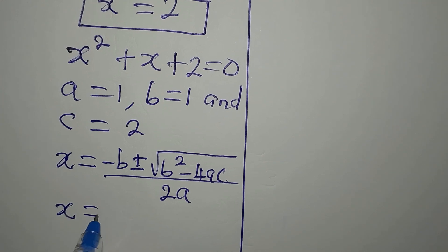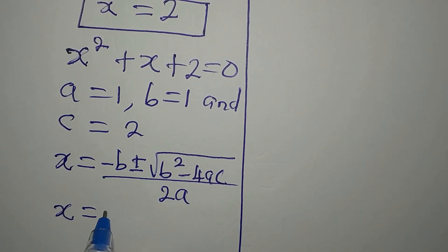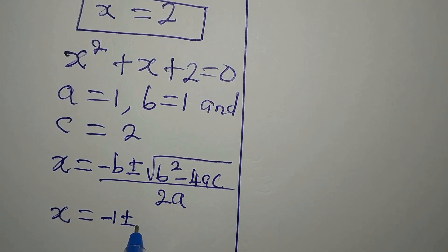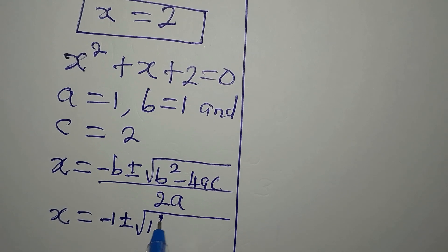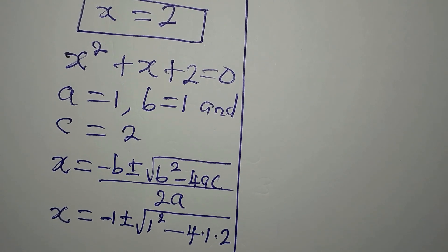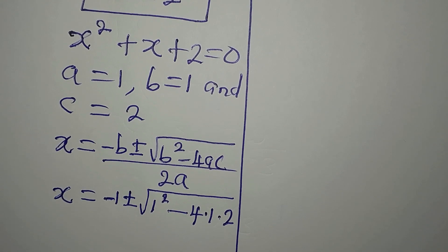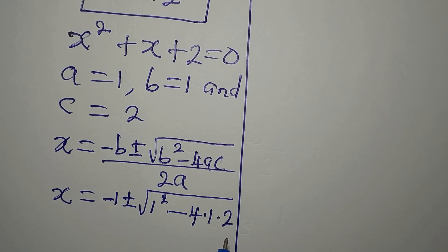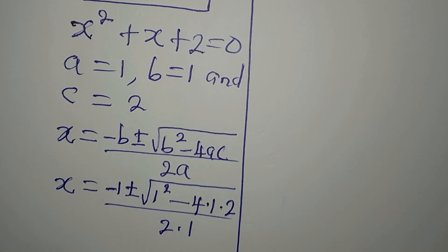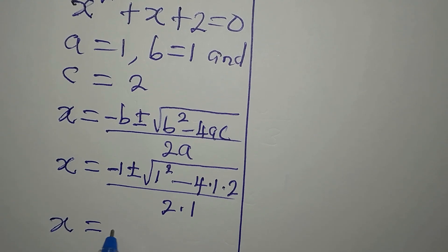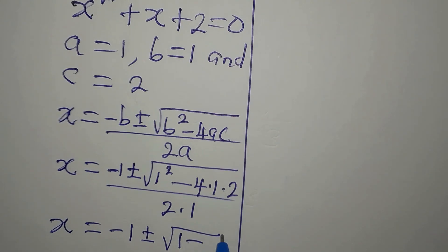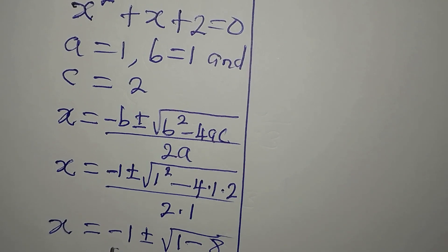Substituting the values: x equals minus 1, plus or minus the square root of 1 squared minus 4 times 1 times 2, all divided by 2 times 1. So x equals minus 1 plus or minus the square root of 1 minus 8, then divided by 2.